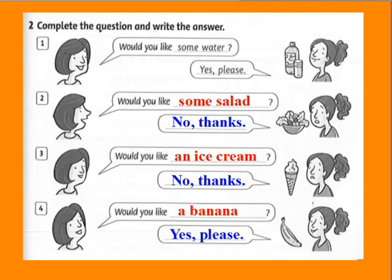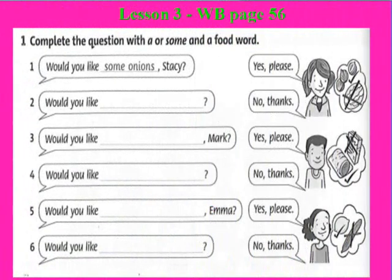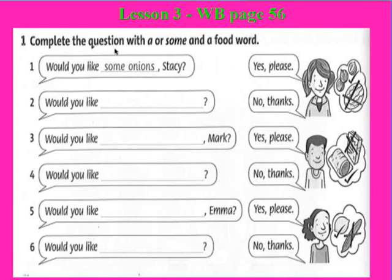Now we turn to the exercises in lesson 3. Page 56. Open your workbook to page 56. Exercise one: Complete the question with 'a', 'an', or 'some' and the name of a food. Each person has two food items — one they choose and one they don't. Look and observe, then complete the question.